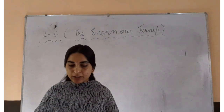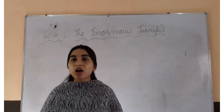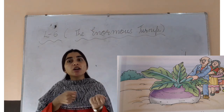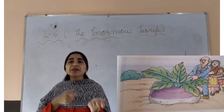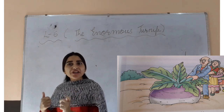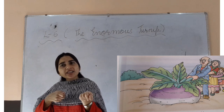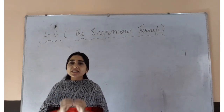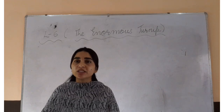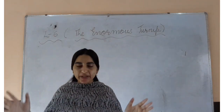The old man and the old woman and the boy pulled and pulled. Now old man is there, behind him old woman is there, and behind her, the boy is also there. These three are all pulling the enormous turnip, but still they are helpless. They are not able to pull out the enormous turnip because it is so big.